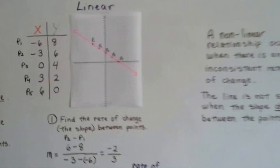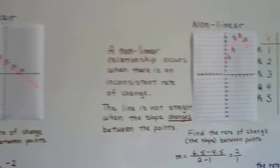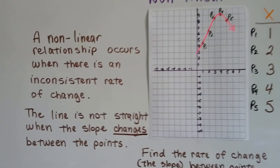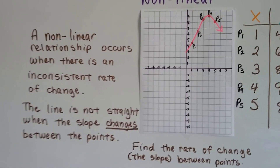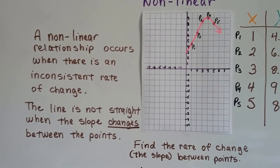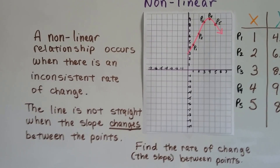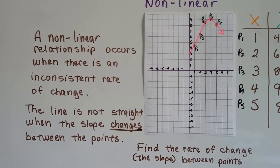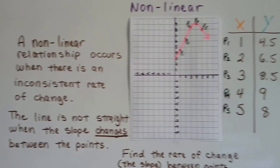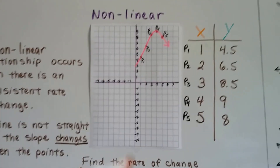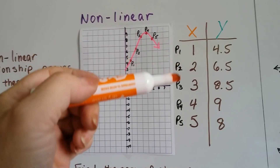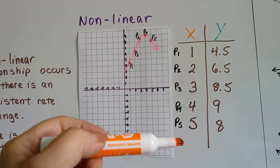Now let's take a look at this one. This one's nonlinear. A nonlinear relationship occurs when there's an inconsistent rate of change. The line is not straight when the slope changes between the points. So we look at our table of values — here's point 1, 2, 3, 4, and 5.